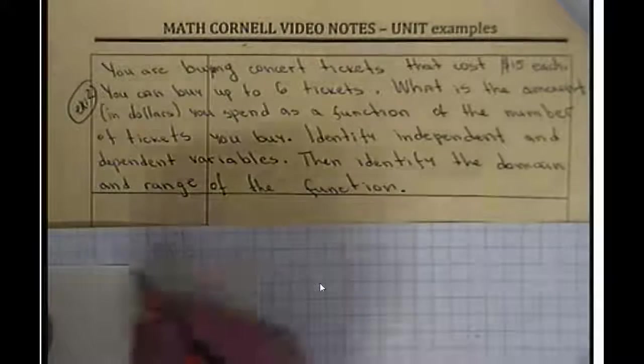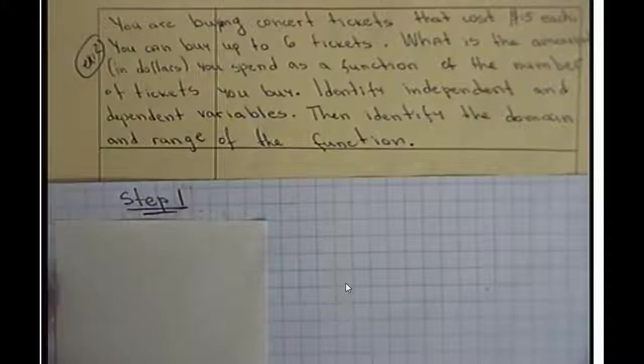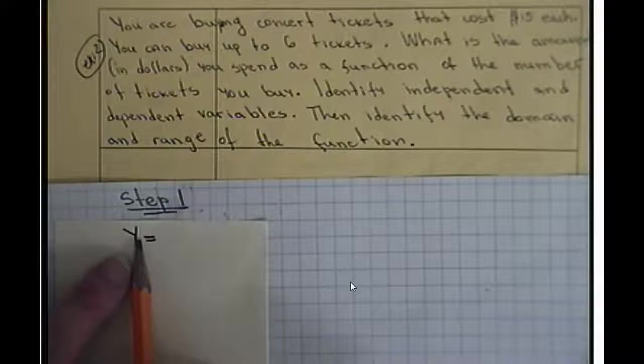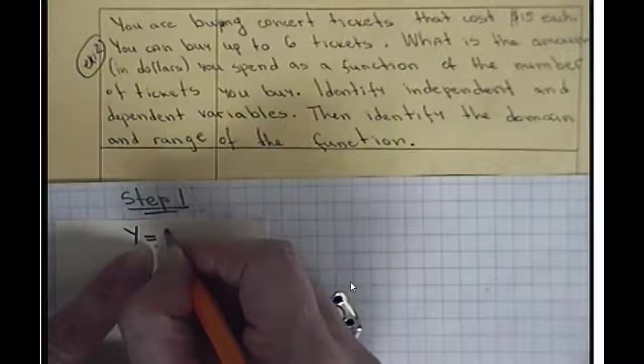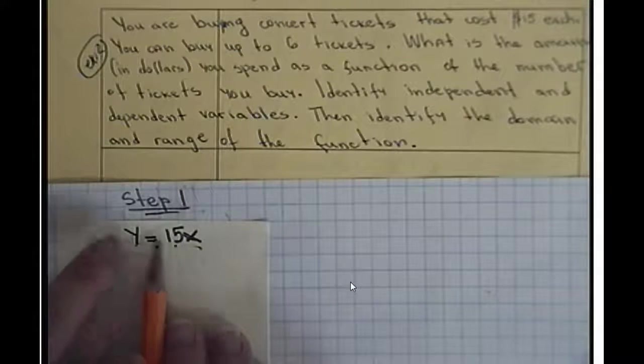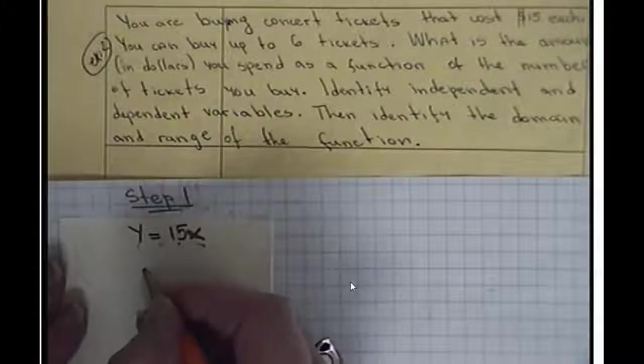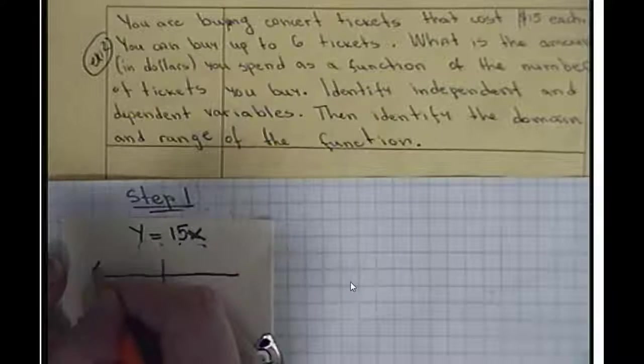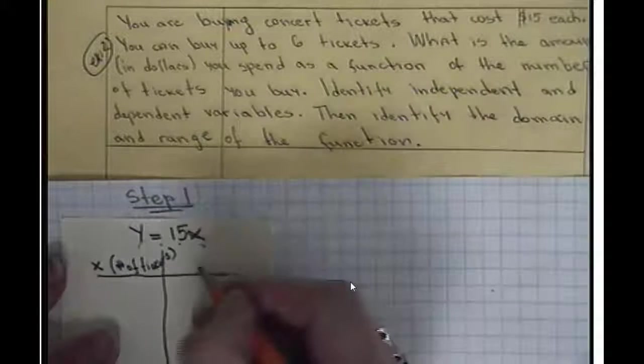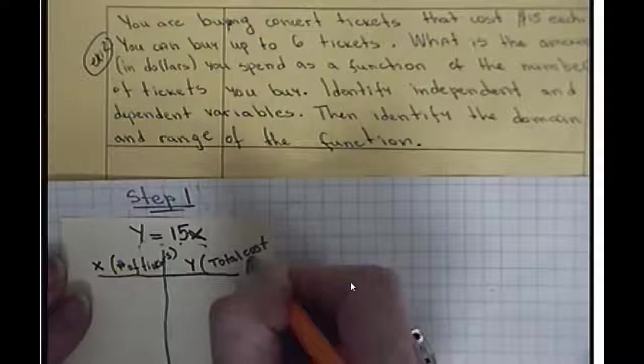So, you're buying concert tickets that cost 15 dollars each. You can buy up to 6 tickets. What is the amount in dollars you spend as a function of the number of tickets you buy? Identify independent variables, then identify the domain and range of the function. Alright, so I want you to write step 1 as the first thing. Step 1. So, if I need to write this as a function, I would say, y is equal, y is the amount we spend. So, how much money we're going to spend, it depends on 15 dollars per ticket. So 1 ticket is 15 dollars, and this will give us the total amount we want to spend.